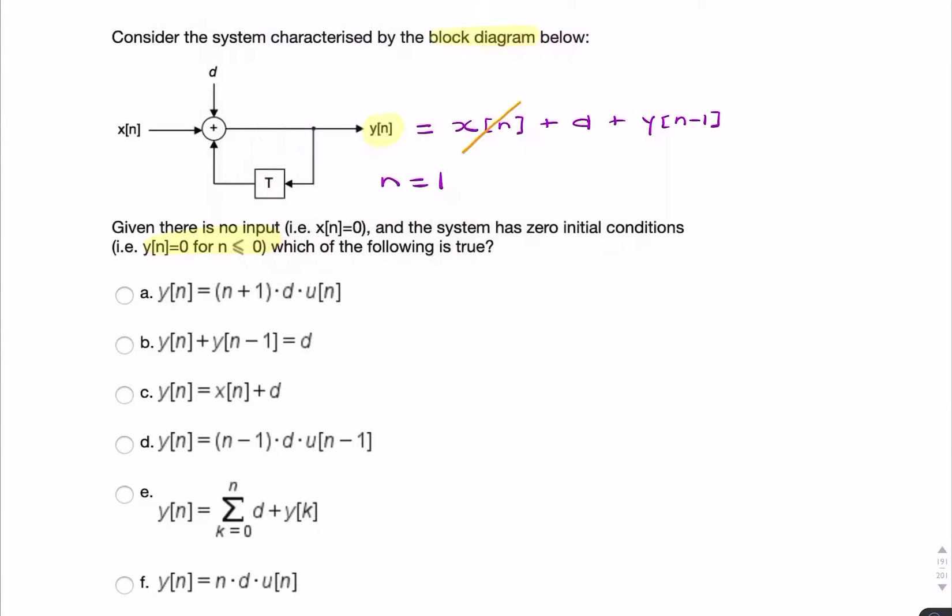So we can try to construct a sequence for y of n. y of n will start off as 0 when n equals 0. Then when n equals 1, it'll be d plus y of 0, so d plus 0, which is simply d.